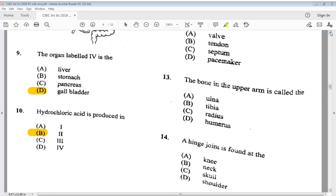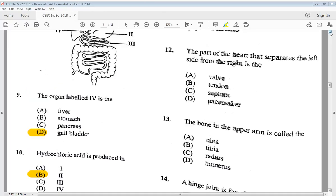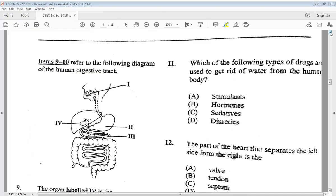Let's go to number 11. Which of the following types of drugs are used to get rid of water from the human body? A, stimulants. B, hormones. C, sedatives. Or D, diuretics. So we know the answer is D, diuretics.